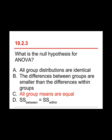The answer is c) all group means are equal. Option a) all group distributions are identical looks tempting, but the analysis of variance is comparing means, not the entire distribution — distributions could have very different shapes, kurtosis, or variance, but as long as the means are the same, the numerator of the formula comes out as zero, which is the null. Option b) the differences between groups are smaller than differences within groups would give you an F value between zero and one, but not zero. Option d) SS between equal to SS within would give you an F value of one — but again, the null is that F equals zero.